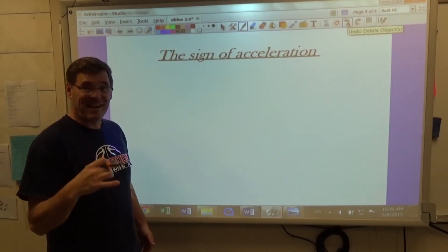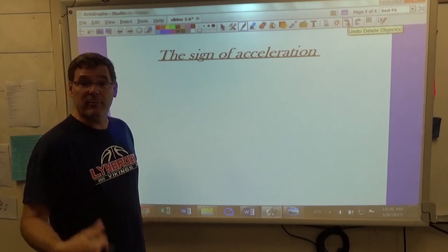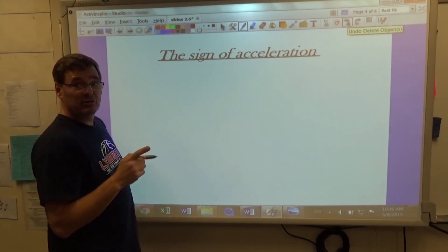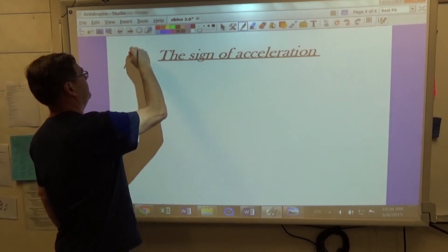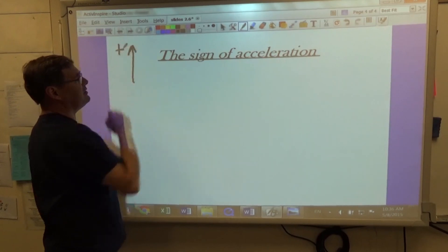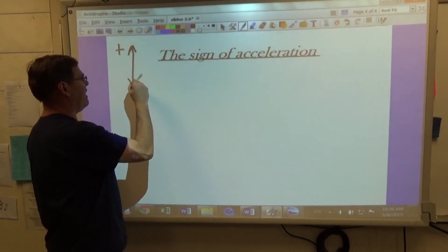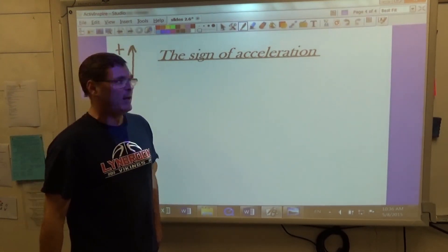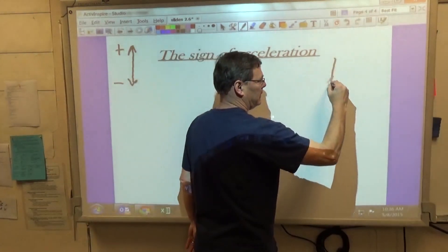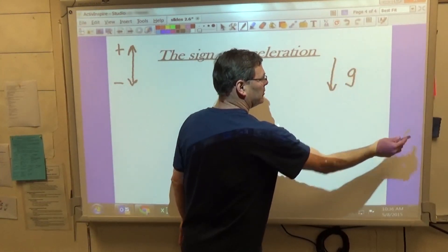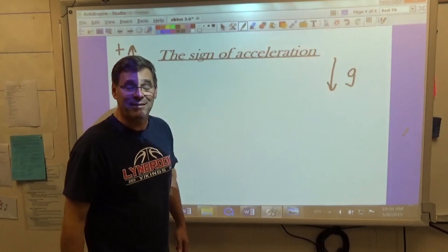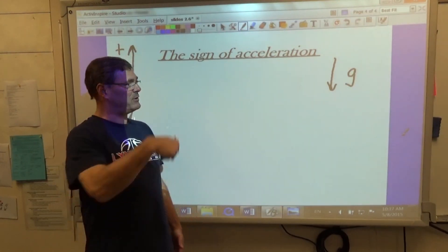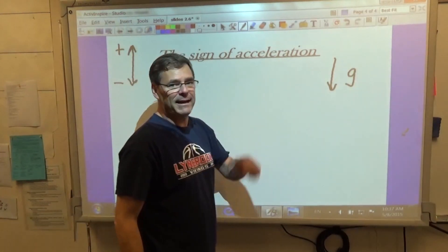Let's talk about the sign of acceleration, plus or minus. It's conventional to say up is the positive direction. So of course, then down would be the negative direction. Gravity always acts down of course. So that's why we often say gravity is negative 9.8 meters per second squared, because it's in the negative direction.